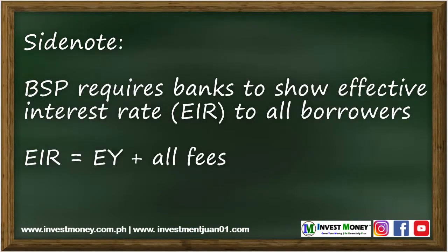As a side note, the BSP requires all banks to inform the customer of the effective interest rate they charge for the loan, also known as EIR. However, the BSP definition includes all other fees on top of the effective yield to compute the EIR. So EIR will basically be EY plus processing fees, appraisal fee, registration fees, and all other fees. For this discussion, we will focus on EY alone, and we will leave it to the banks to inform you of their EY and EIR.